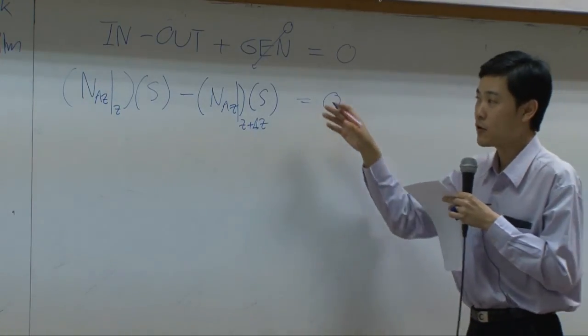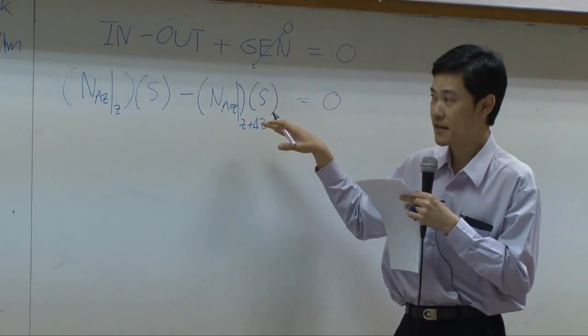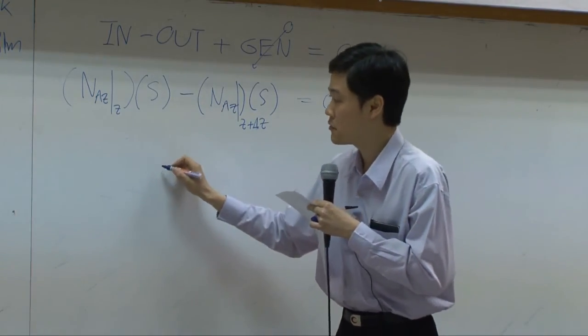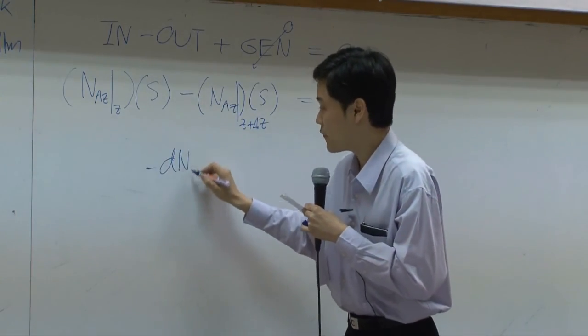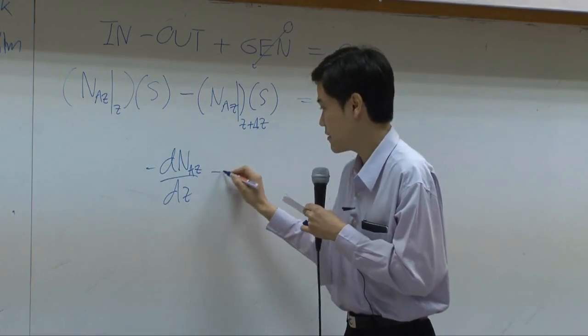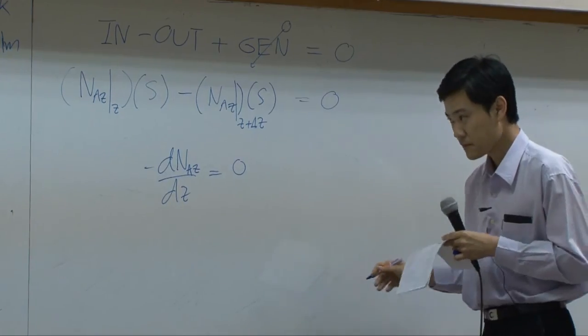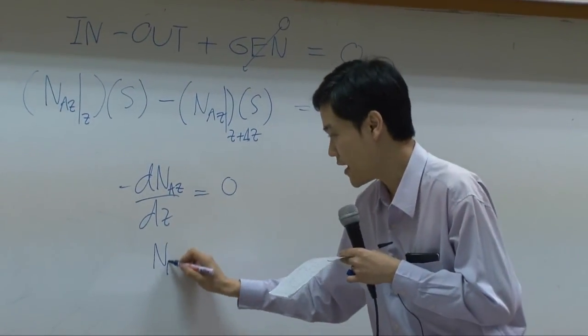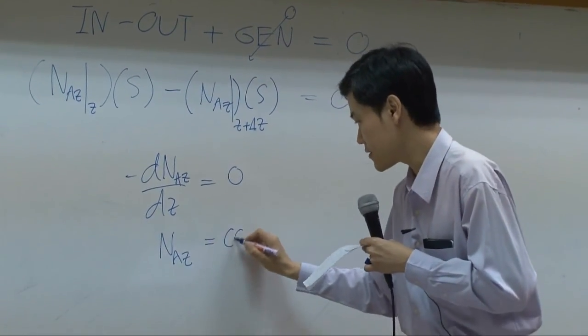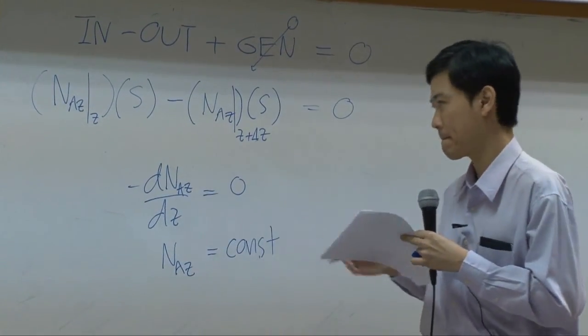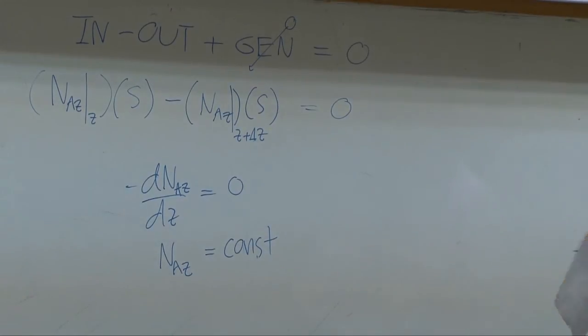So if you divide the whole equation by S delta Z and take delta Z to be approaching zero, you get differentiation of NAZ by DZ equal to zero, or NAZ is a constant.